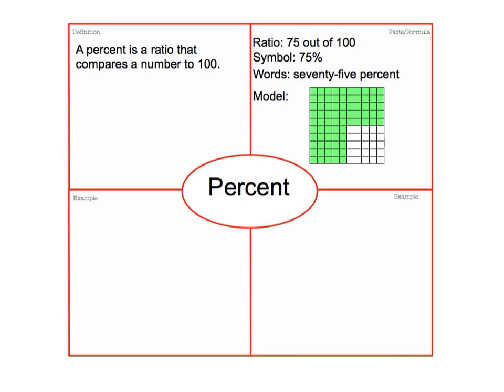A percent is a ratio that compares a number to 100, and we can do this in a couple different ways. We could do it as a ratio, 75 out of 100. We could do it with a symbol, the percent symbol. Some of you probably have seen this on your electronic devices, how much battery life is left. You can do it in words, 75%.